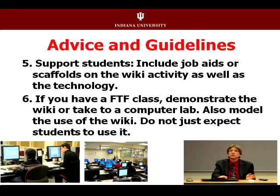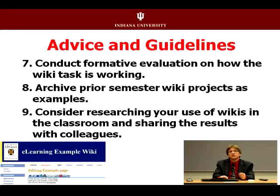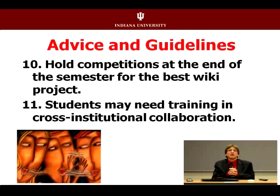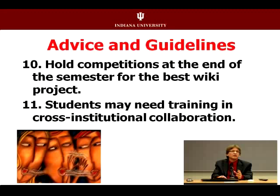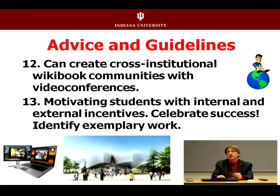If you can meet face-to-face, take students to a computer lab and try things out. When done, conduct formative and summative assessment. Archive what worked well so students can see what's effective. Consider researching what you've done and sharing results with others. Some people hold competitions for best wiki book projects with awards at the end. For cross-institutional collaborations, provide training for people in other countries who might not have the English skills or wiki backgrounds, and use video conferences so international team members can see each other.